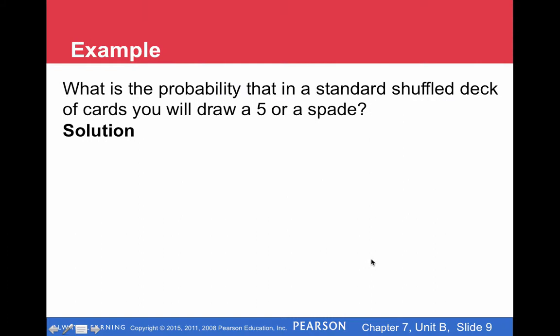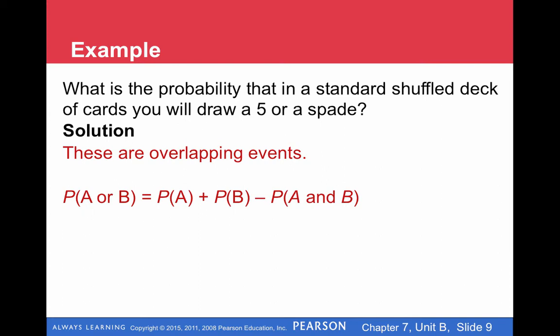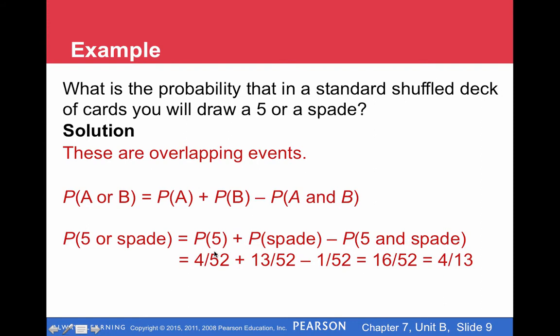What is the probability that in a standard shuffled deck of cards you will draw a five or a spade? This is just one selection, so we're not multiplying. These events overlap. The probability of selecting a five is four out of 52 total cards. The probability of selecting a spade is thirteen out of 52 cards. But there is a five of spades — one card that we've counted twice. So we subtract it off once so that we only count it once. Four plus thirteen is seventeen, and seventeen minus one is sixteen. Sixteen out of fifty-two reduces to four out of thirteen.